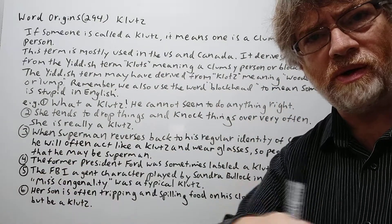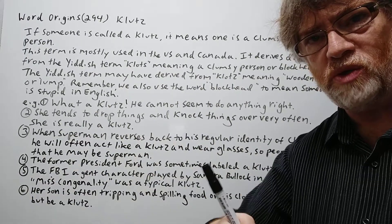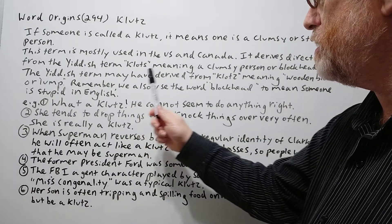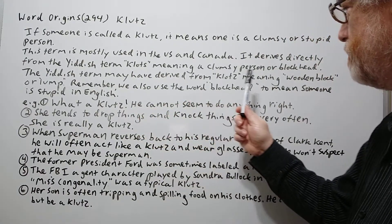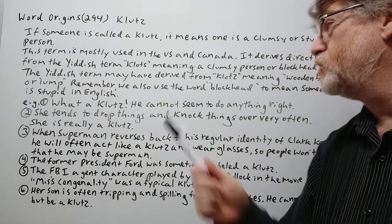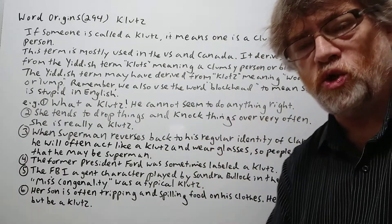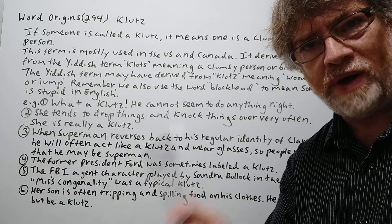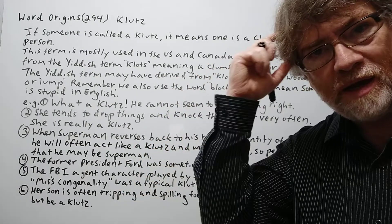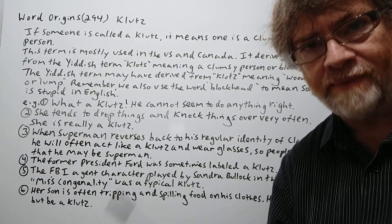A lot of it may have also been popularized by the Jewish community out of New York City. The Yiddish term may have derived from klotz meaning wooden block or lump. Remember, we also use the word blockhead to mean someone is stupid in English. The idea is that you don't have a brain — you just have a block of wood or a block of stone in your head. The brain is missing.